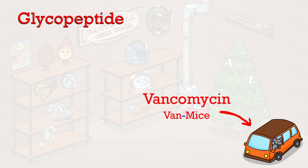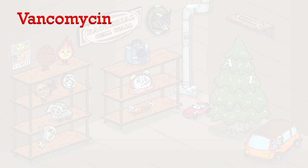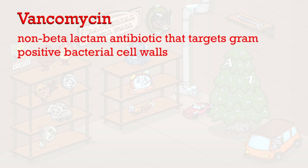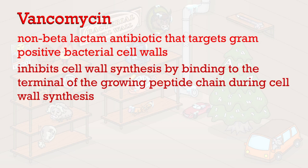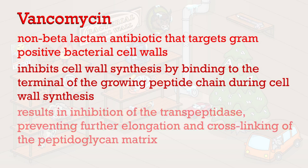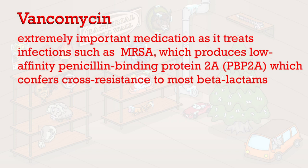The last medication we are going to talk about is vancomycin, represented by the van taken over by mice. Vancomycin is a non-beta-lactam antibiotic that targets gram-positive bacterial cell walls. It works by inhibiting cell wall synthesis by binding to the terminal of the growing peptide chain during cell wall synthesis, resulting in inhibition of transpeptidase and preventing further elongation and cross-linking of the peptidoglycan matrix. Vancomycin is extremely important as it treats infections such as MRSA, which produces low-affinity penicillin-binding protein 2A, conferring cross-resistance to most beta-lactams.